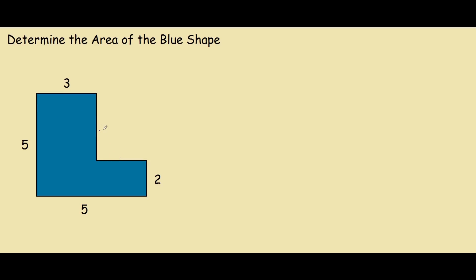We can work out the missing dimensions from basic algebra. If we know this entire length over here is 5, we can do 5 subtract 2 is 3. And for this length over here, 5 subtract 3 is 2.